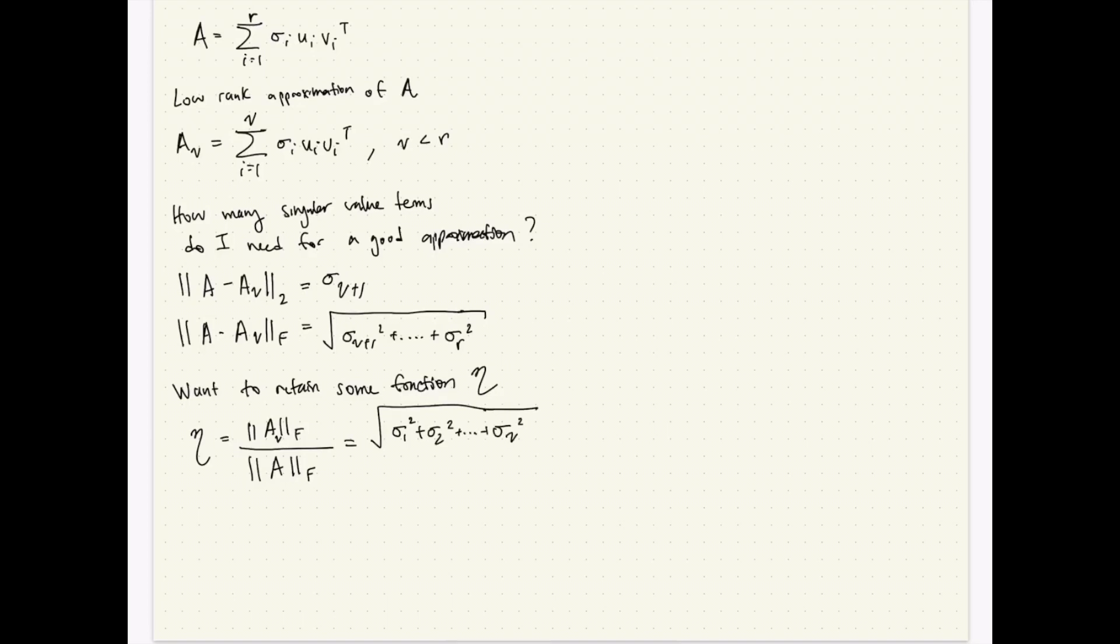divided by the square root of sigma 1 squared plus sigma 2 squared plus dot dot dot plus sigma nu squared dot dot sigma R squared.